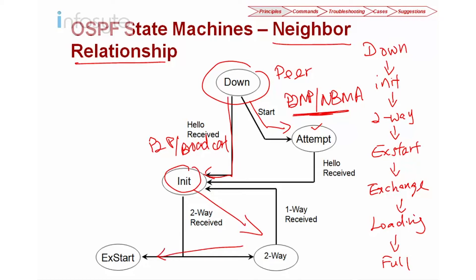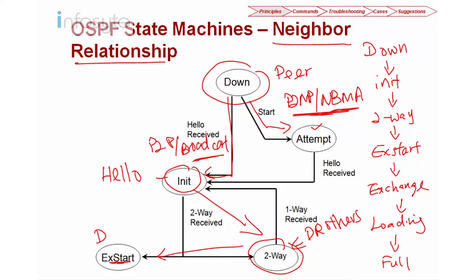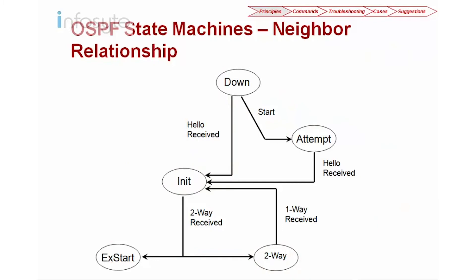From Init state they send the hello packet. Some routers under broadcast and NBMA network types will just stay in the Two-Way state — these are the DR Others. Whoever is not a DR Other goes on to ExStart and starts to send DD packets. So the neighbor relationship on OSPF goes: Down → Init → Two-Way → ExStart. For point-to-multipoint and NBMA it goes: Down → Attempt → Init → Two-Way → ExStart.